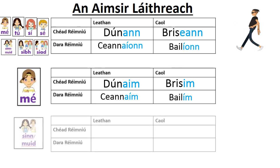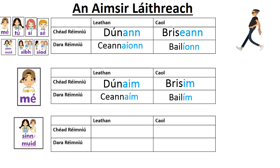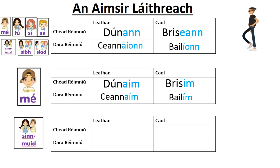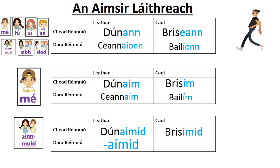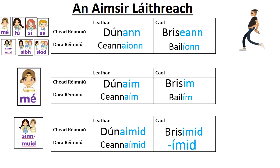There's always a separate ending for 'sinn' and 'muid' — for 'we'. You can actually use the general ending and just write 'sinn' or 'muid' with it, but the better way is to use '-aimid'. So: dúnaimid (we close), brísimid (we break), ceannaímid (we buy), bailímid (we collect).